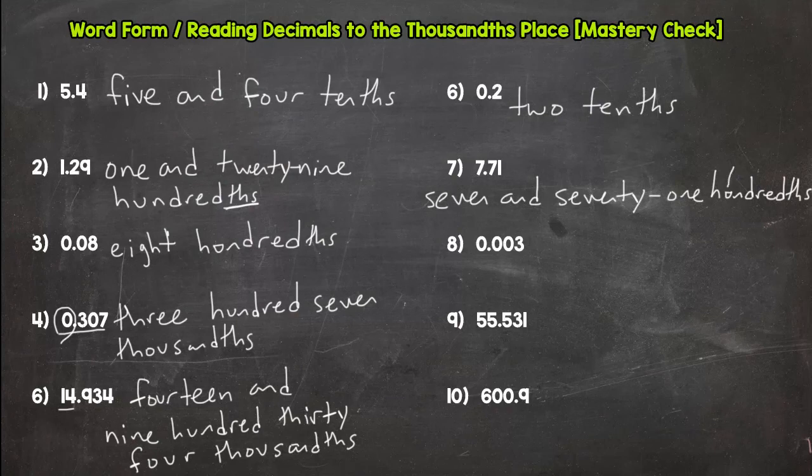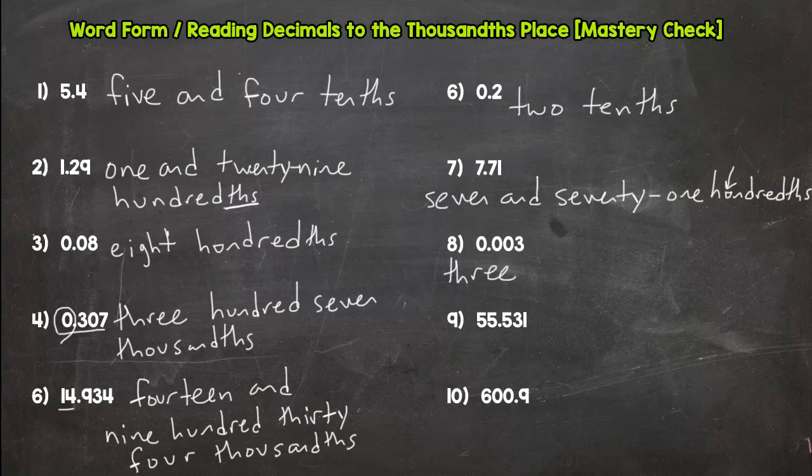I don't know why my U right here close the top, but that's a U. Number eight: three thousandths.